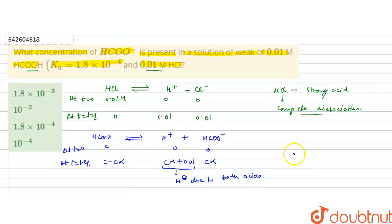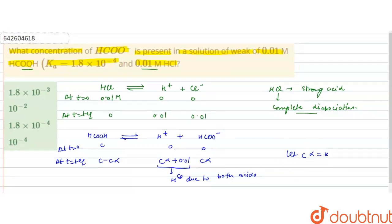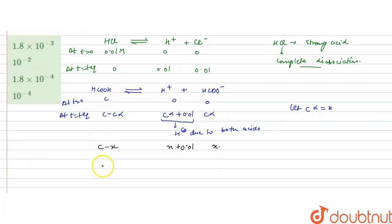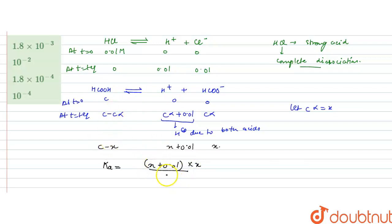If we let C·alpha equal X, we can write: HCOOH at equilibrium is C minus X, H⁺ is X plus 0.01, and HCOO⁻ is X. Now we can write Ka for HCOOH as the concentration of products divided by concentration of reactants: Ka = (X + 0.01)(X) / (C − X).